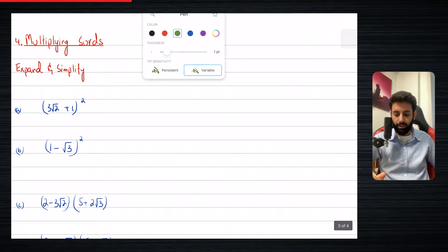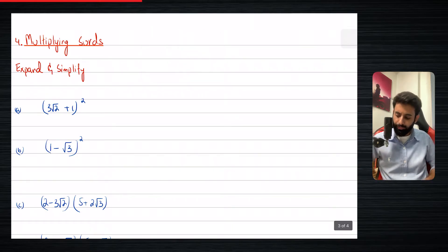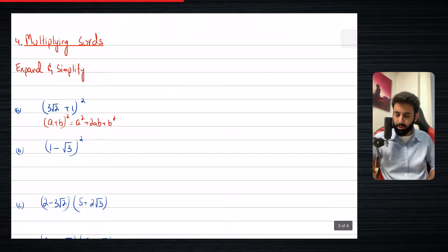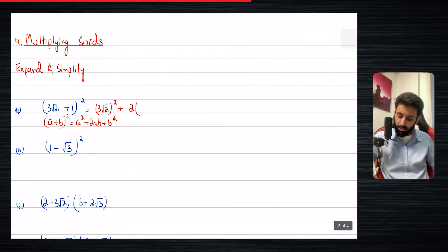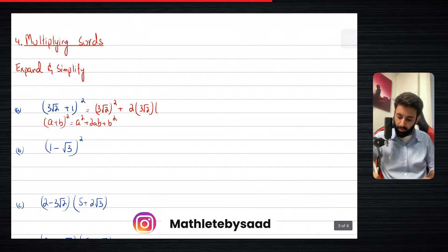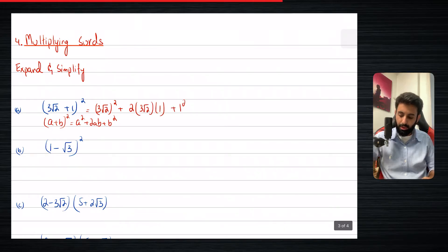What we have here is root three plus one, the whole thing squared. You can use the identity: (a + b)² = a² + 2ab + b². The only difference is that in place of a we have 3√2, and in place of b we have one. So this becomes (3√2)² + 2 × 3√2 × 1 + 1².